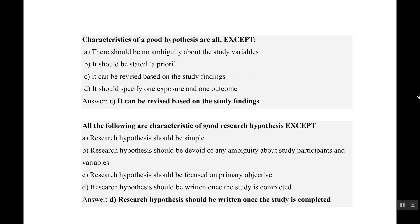Characteristics of a good hypothesis — all except which? There should be no ambiguity: yes, it should be very specific — correct. It should be stated a priori, meaning stated in advance — correct. It can be revised based on study findings — no, once you have made your hypothesis you cannot change it, so C is the wrong statement. It should specify one exposure and one outcome to keep it simple — correct, so D is correct.